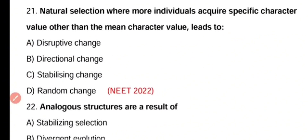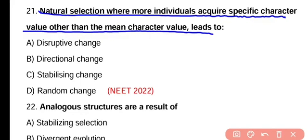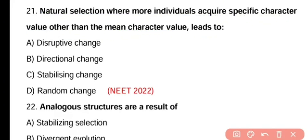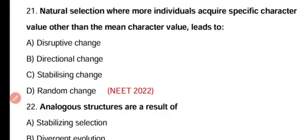Question number 21. The natural selection where more individuals acquire a specific character value than the mean character value leads to disruptive change, directional change, stabilizing change, or random change. The correct answer is option C — stabilizing change.